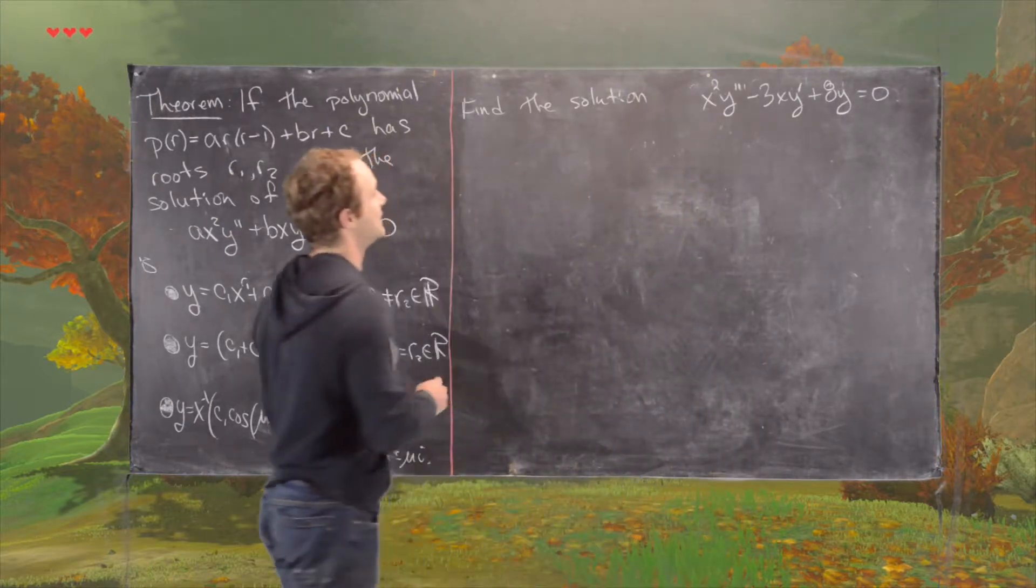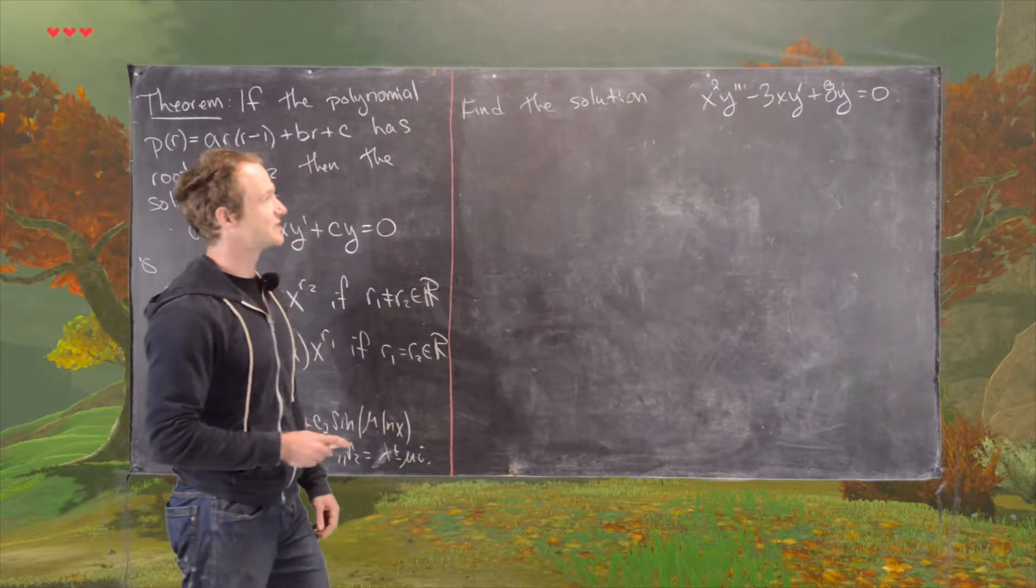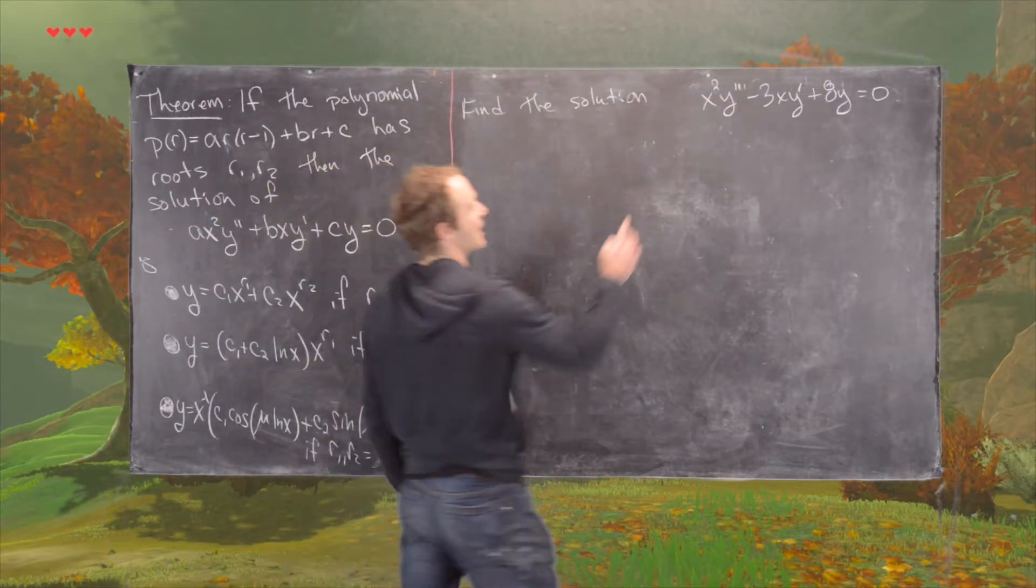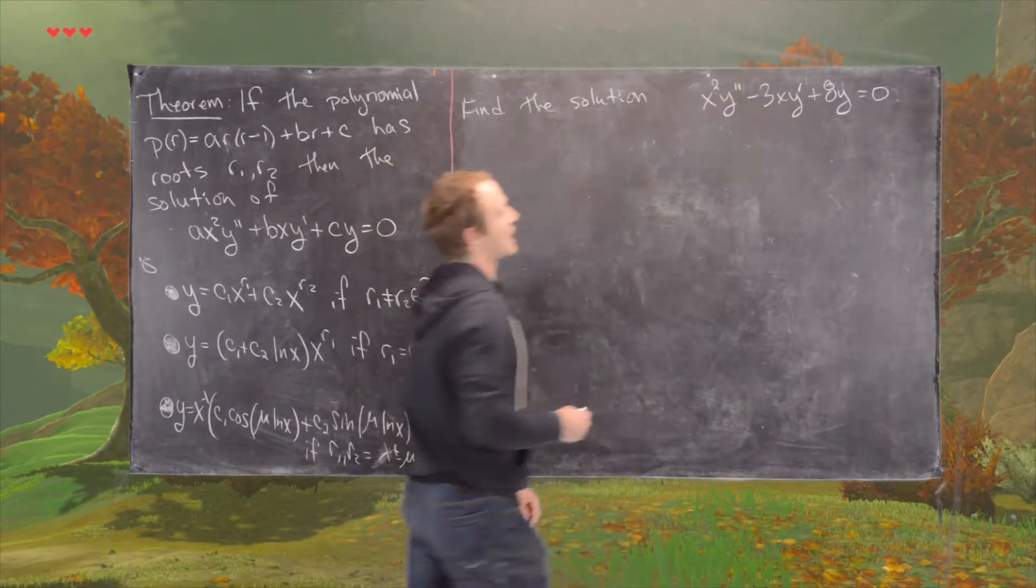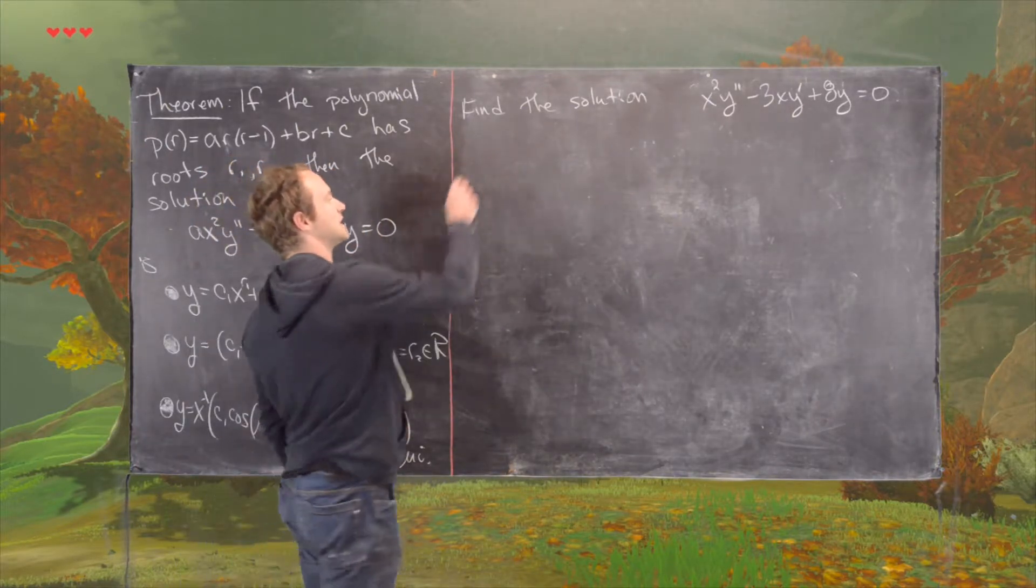In this example we're going to look at x squared Y double prime minus 3XY prime plus 8Y equals zero. We'll look at two solutions.